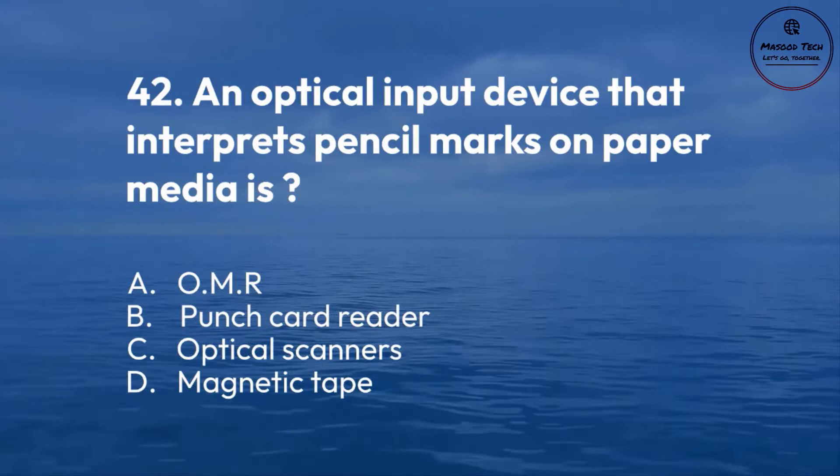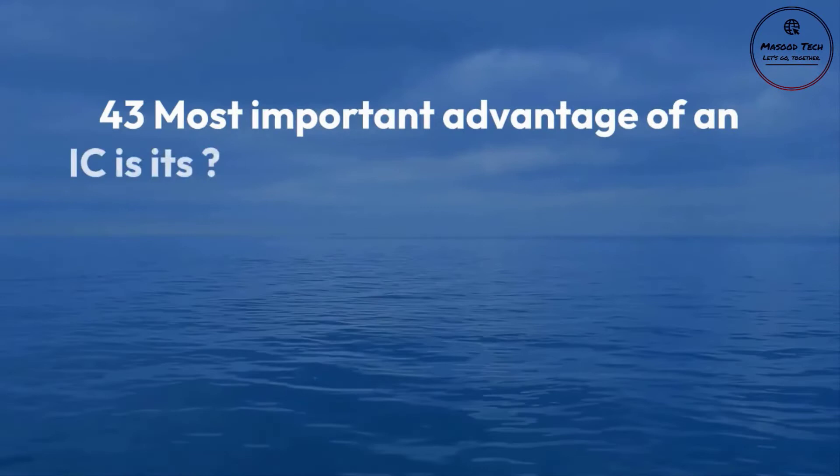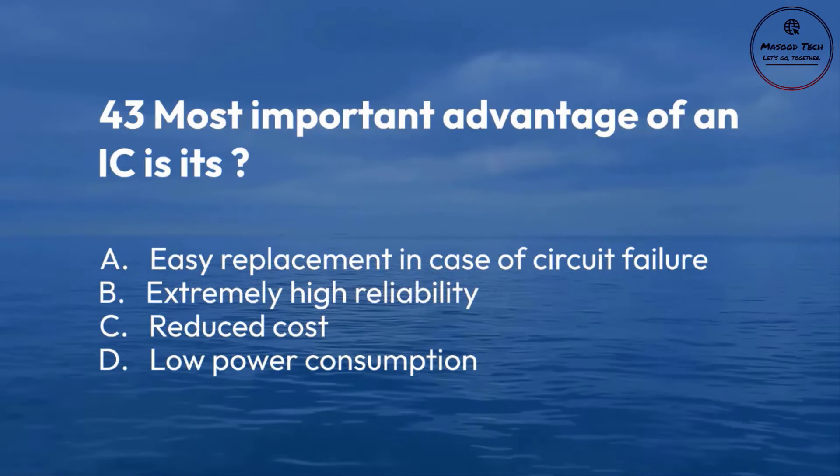Number 43. Most important advantage of an IC is its: A. Easy replacement in case of circuit failure. B. Extremely high reliability. C. Reduced cost. D. Low power consumption. Correct answer is B.